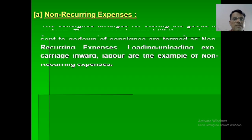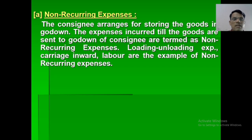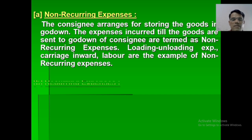Non-recurring expenses: the consignee arranges for storing the goods in a go-down. The expenses incurred until the goods are sent to the go-down are non-recurring expenses. Examples include loading, unloading, cartage, and labour.